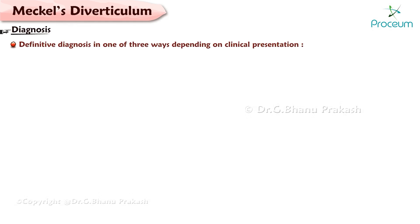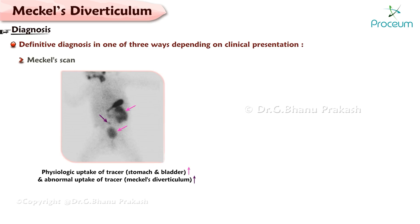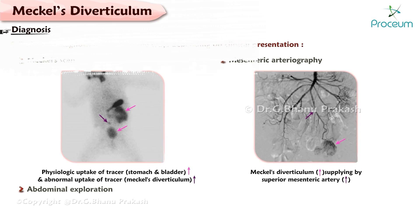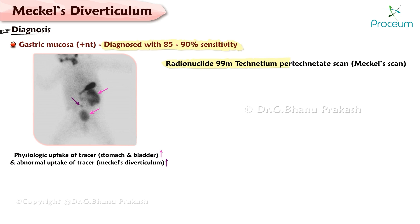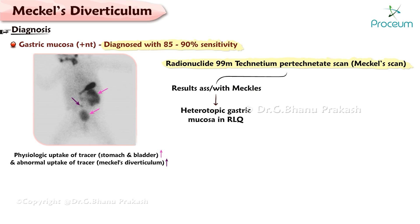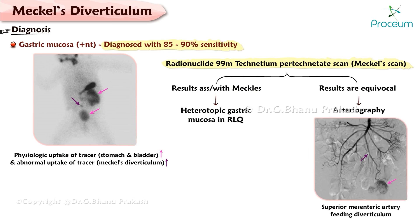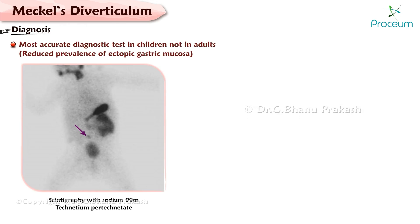Diagnosis. A definitive diagnosis of Meckel's Diverticulum is generally made in one of three ways depending upon the initial clinical presentation: a Meckel scan, mesenteric arteriography, or abdominal exploration. Provided that gastric mucosa is present, the diagnosis can be made with 85–90% sensitivity by a radionuclide 99mTc pertechnetate scan, also called a Meckel scan. Radionuclide scan findings show the presence of heterotopic gastric mucosa in the right lower quadrant of the abdomen. If radionuclide scan results are equivocal, arteriography may be used, which will show an anomalous branch of the superior mesenteric artery feeding the diverticulum. The most accurate diagnostic test in children is scintigraphy with 99mTc pertechnetate, but not in adults, because of the reduced prevalence of ectopic gastric mucosa.